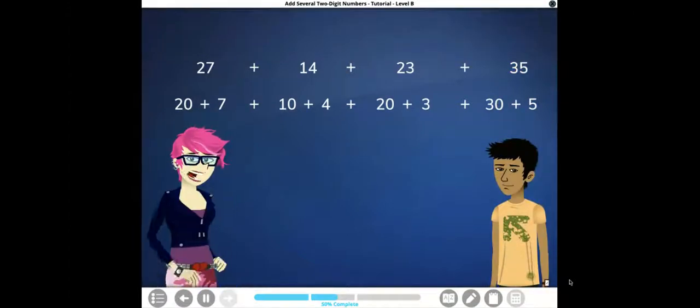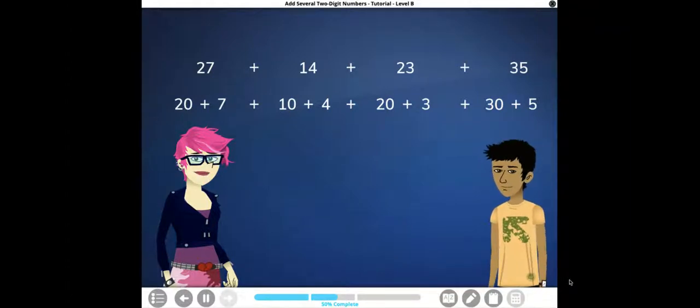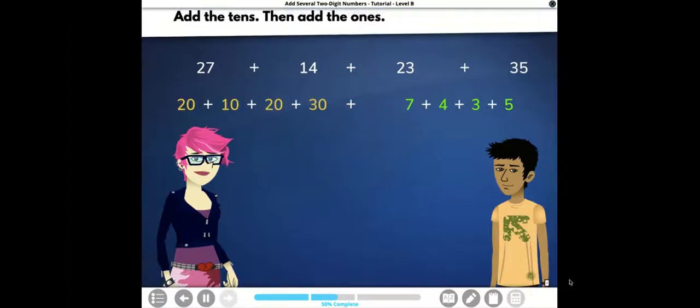All four numbers are written in expanded form. Now what? Now we're ready to start adding. Since we can add in any order, let's group the tens together and group the ones together. Add the tens, then add the ones.